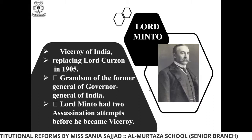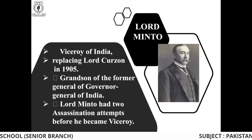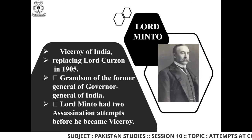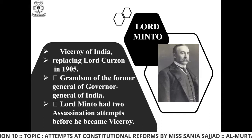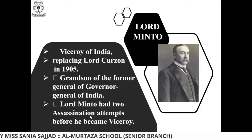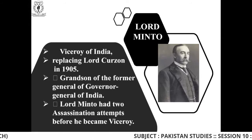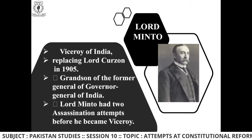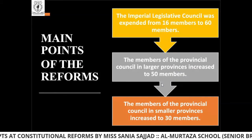Lord Minto also played an important role. He was Viceroy of India and replaced Lord Curzon in 1905. He was the grandson of a former Governor-General of India. Lord Minto had two assassination attempts before he became Viceroy.